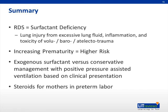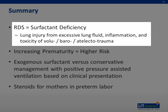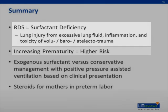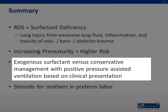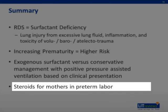In summary, when you hear RDS, remember surfactant deficiency — but that really is only the beginning. The ultimate lung injury derives from loss of surfactant or inactivated surfactant combined with inflammation and the treatments necessary to overcome surfactant deficiency, including mechanical ventilation, volutrauma, pressure trauma, and atelectotrauma. The more premature you are, the higher risk you have. Management depends on your clinical symptoms: CPAP if symptoms are mild, or intubation and exogenous surfactant if severe. Antenatal steroids have a clear benefit for moms in preterm labor in terms of reducing RDS and reducing multiple other neonatal morbidities as well.